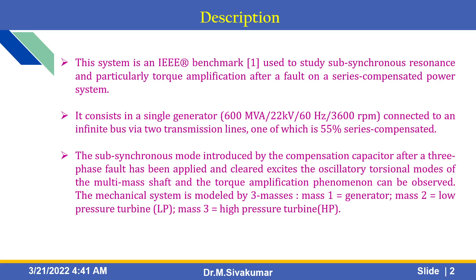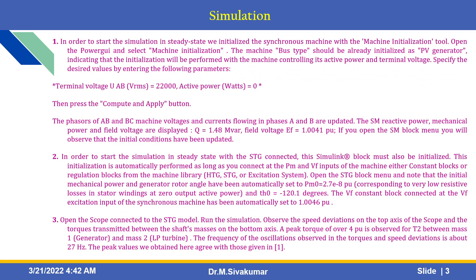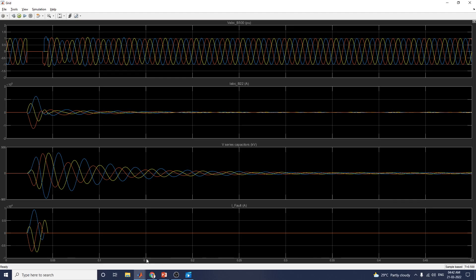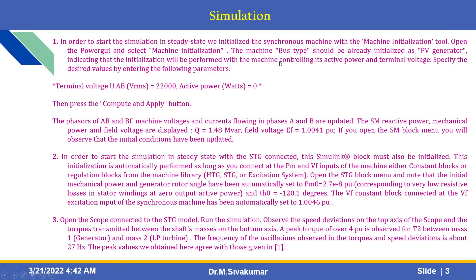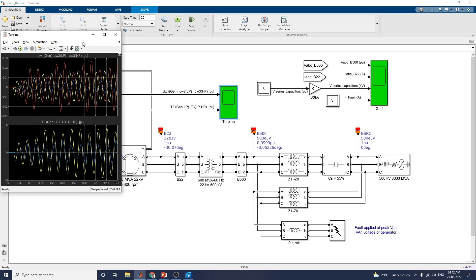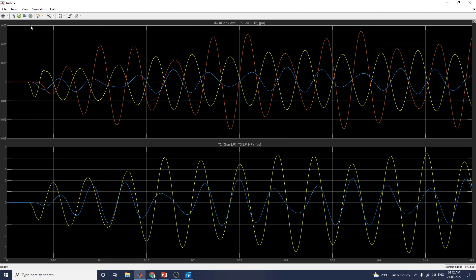The mechanical system is modeled by three masses: mass one is the generator, mass two is the low pressure turbine, and mass three is the high pressure turbine. These are all the simulation blocks and simulation procedures — you can get the output on both the grid side and the turbine side.